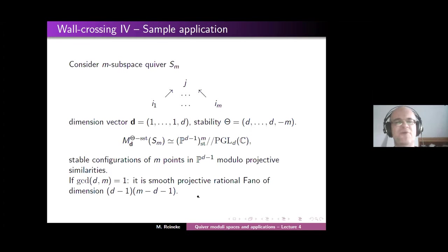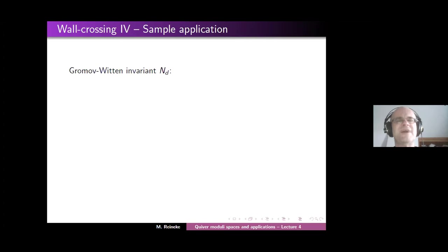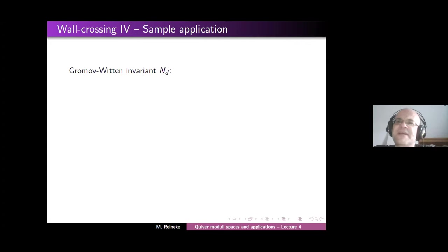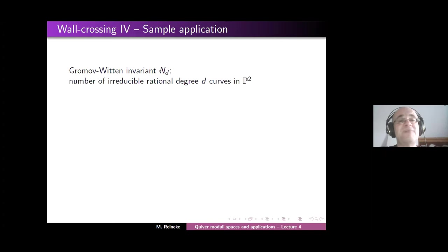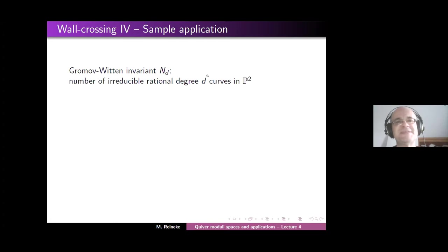Let me define a Gromov-Witten invariant N_D. Forget about moduli spaces for a minute and just look at how we define these. Gromov-Witten invariants are certain enumerative invariants. I define N_D as the number of irreducible rational degree-D curves in P^2, passing through (2D-1) given points in general position, and having order D tangency to a given line at a given point. Working with Chow groups and intersection theory, this number is actually well-defined.